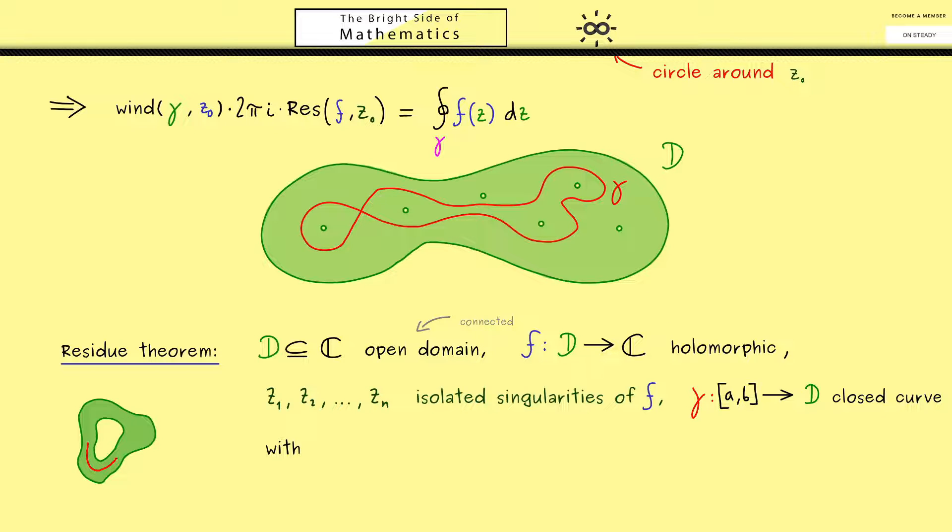So for example this means that this here on the left should not happen. So you already know in other words this means that the interior of the curve gamma should lie completely inside D with the exception of the isolated singularities. So we write interior of gamma union isolated singularities is a subset of D.